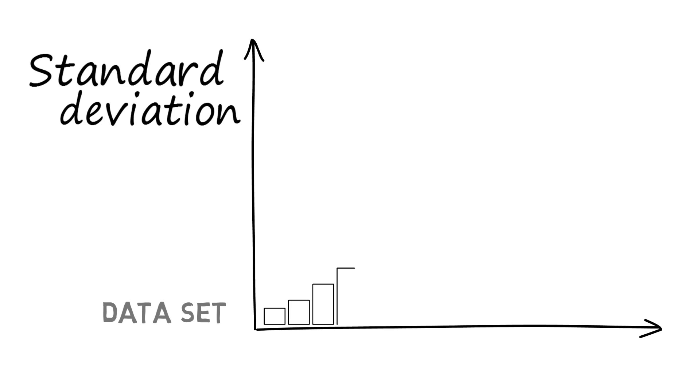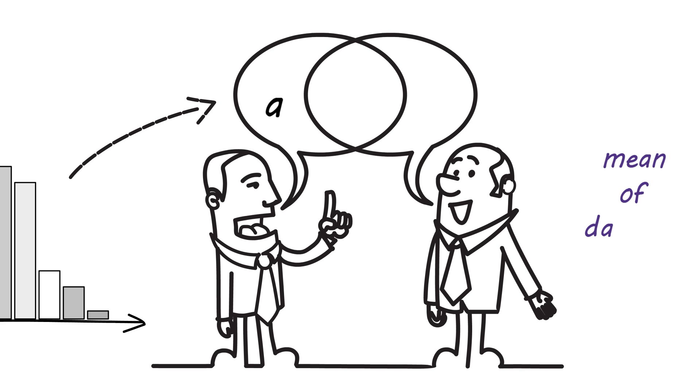Standard deviation is a measure of how spread out a set of data is. If we can combine this number with the mean of a data set, we can say how statistically significant any single value is.